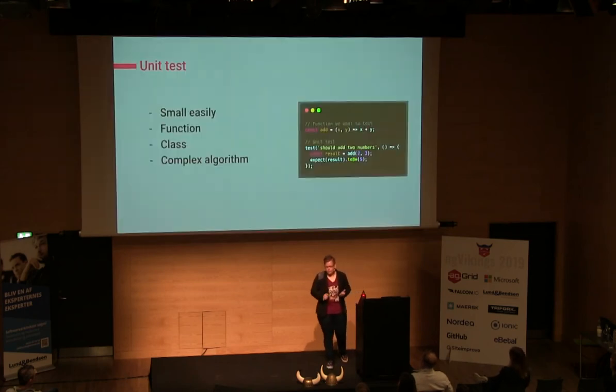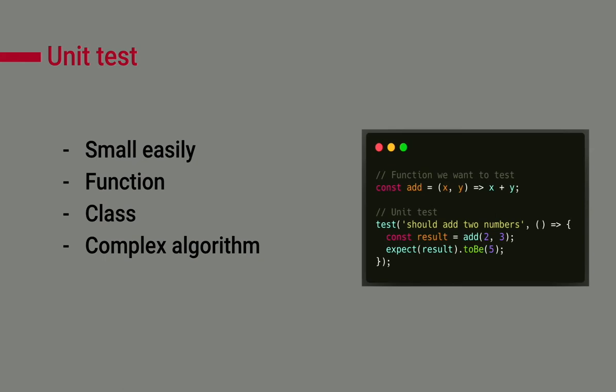So what's the difference between modes? A unit test, you can see it's small. It's easy to test. It's, for example, a function. It can be a class. It can be a complex algorithm. But it's a unit of your code. It can be also, like three methods that we use that are private to simplify our code. For example, we can add something. That's not an end-to-end test because we don't have something visual to test this. It's just some business logic.